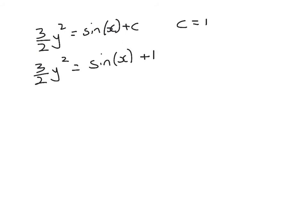So we've got to here. We've got 3 over 2, y squared is equal to sine of x plus c. And from the work we did on the last page, we know that c is equal to 1. So 3 over 2, y squared is equal to sine of x plus 1. And now we do the last thing.